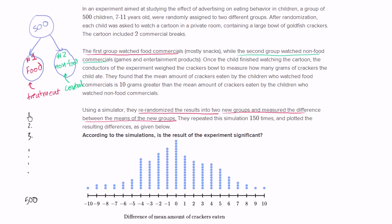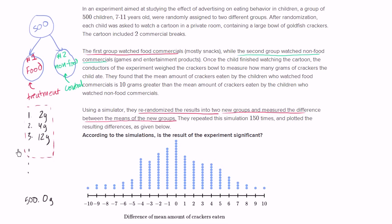For each child they had measured the weight of the crackers eaten — maybe child one ate 2 grams, child two ate 4 grams, child three ate 12 grams, all the way to child 500 who maybe ate zero grams. In the original experiment the first half was in the treatment group and the second half was in the control group, having been randomly assigned. Now in the simulation, they're taking these same results and re-randomizing them.